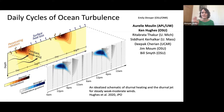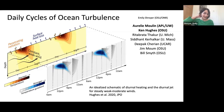Primarily I'll be showing results from Rayleigh Mulan, who was a PhD student at OSU but is now a scientist at APLUW, and then Ken Hughes, who was a postdoc at OSU and is still there in a research scientist position. I'll close by showing some more recent work by Rita Brada Thakar, who Shalika showed some of the work he did as a PhD — he's now a postdoc at University of Michigan — and then Sadhan Karaka, who is a PhD student at the University of Massachusetts. This work is also in collaboration with Deepak Cherian, Jim Moum, and Bill Smith at OSU.